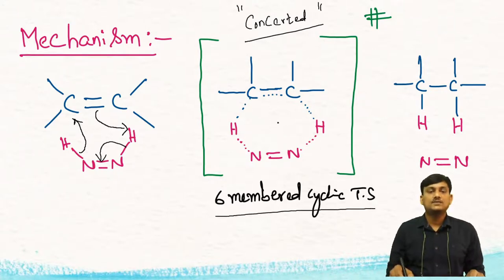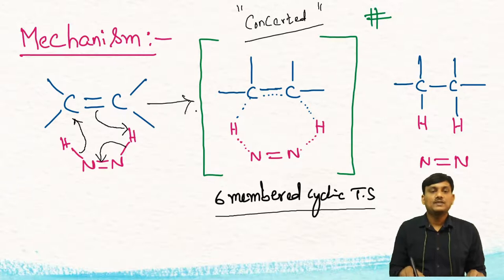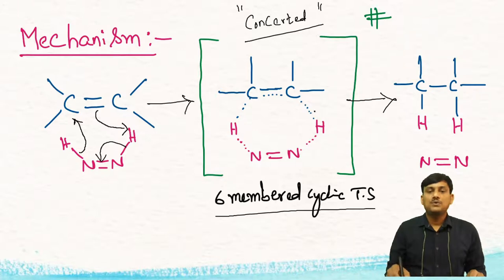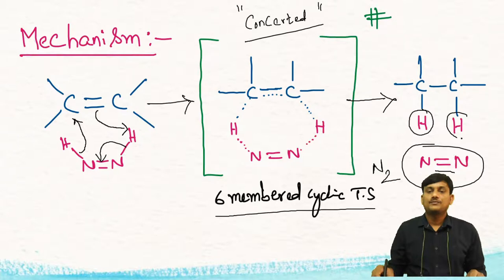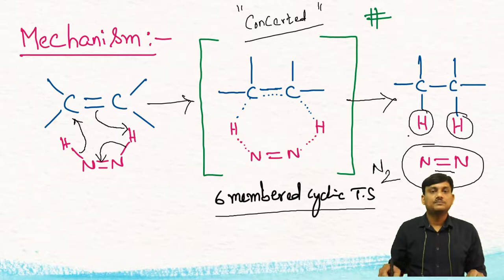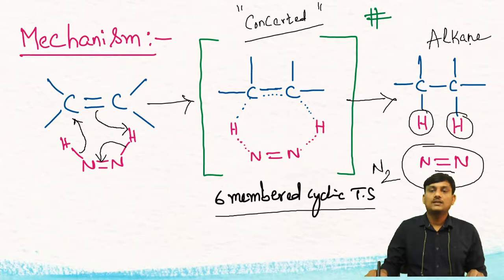There is a formation of a six-membered cyclic transition state. This is highly unstable, so this six-membered cyclic transition state decomposes, resulting in the formation of N2 and the two hydrogens are attached to the C=C carbons, giving a formation of an alkane. Finally the alkene is converted into an alkane.